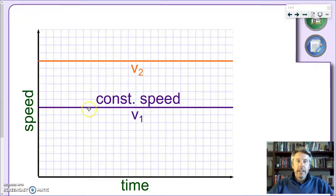On the other hand, if you have an object which has a positive speed, a positive constant speed, in that case you will have, again, a flat line, but it will be a flat line above the x axis.